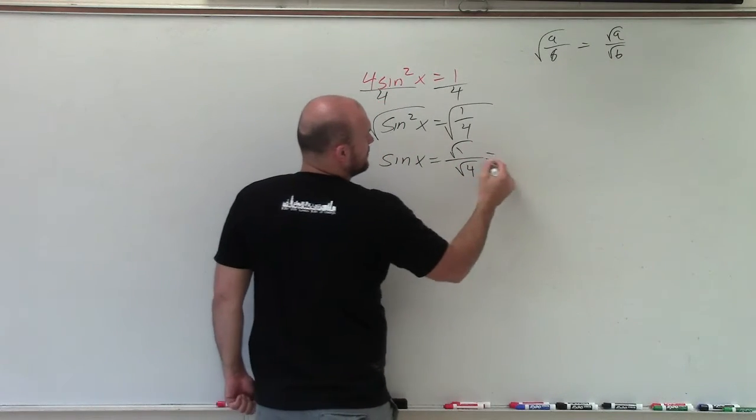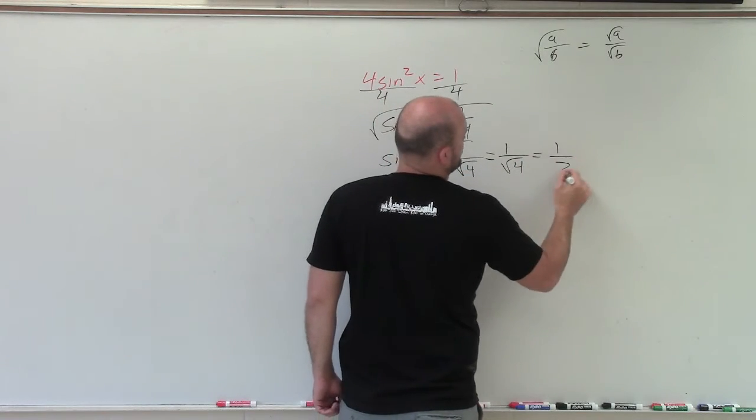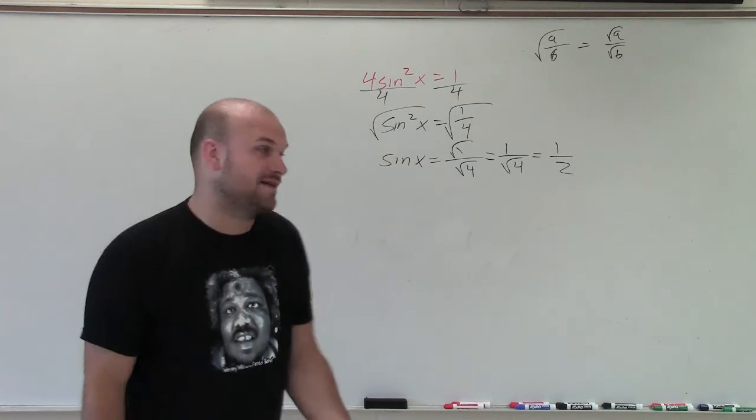Square root of 1 is just 1. Square root of 4 is equal to 2. So I have the sine of x is equal to 1 half.